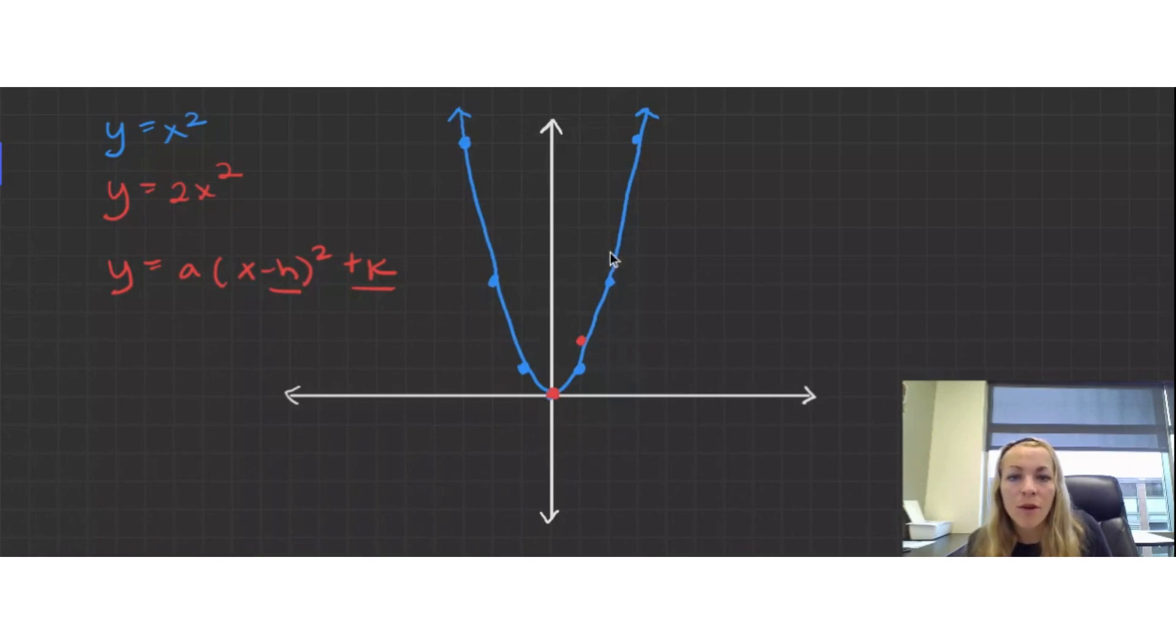And I know there's symmetry with the quadratic, so I'm going to go back negative 1, up 2. And I'm going to go back to negative 2, all the way up to 8. And so we can see a vertical stretch of the graph here.